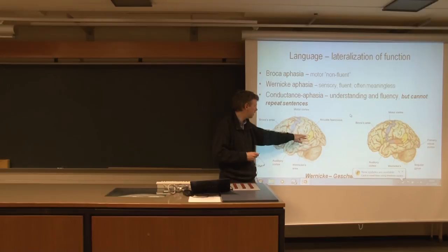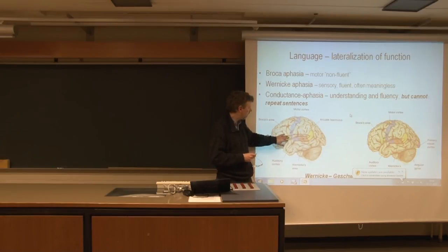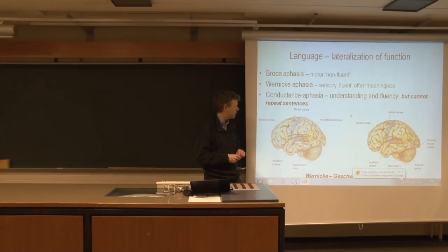And from there be sent through this arcuate fasciculus, a bunch of fibers running to Broca's area, which is sort of the motor area, premotor cortex area, and then into the primary motor cortex, and then to the muscles.